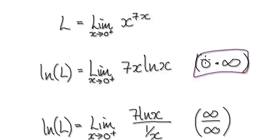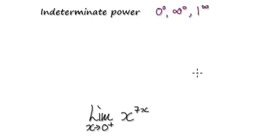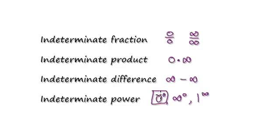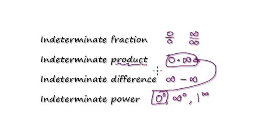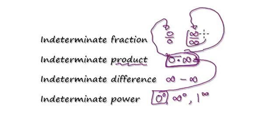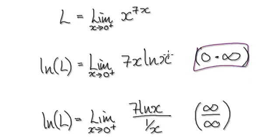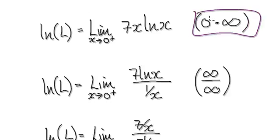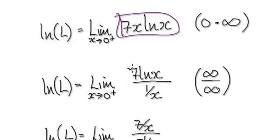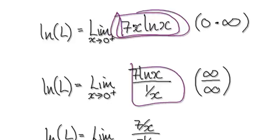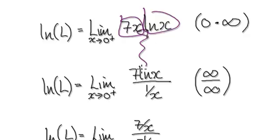So zero times infinity — here's a product. That's this bit here. So we started with this, and then we got to this stage here: zero times infinity. And if you have a product, you can always rewrite it as a fraction. So our aim is to somehow get to zero over zero, or somehow get to infinity over infinity. We are currently at the zero times infinity stage. You can always rewrite this product — one block multiplying another block — as a fraction. This is the same thing, just written differently.